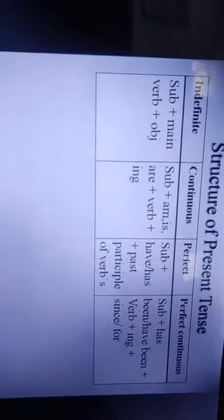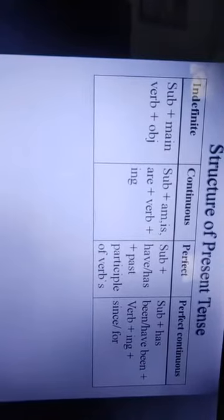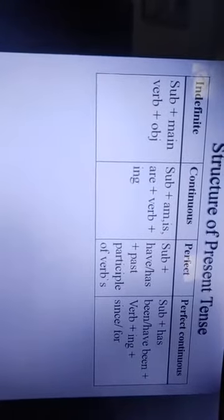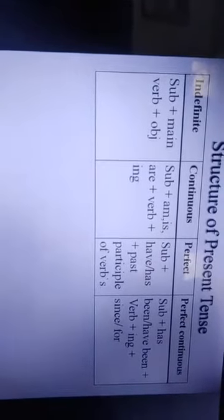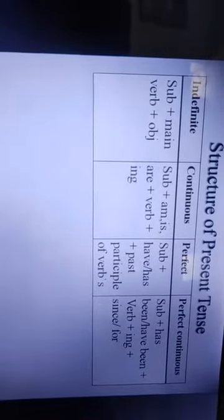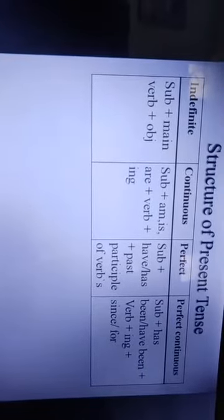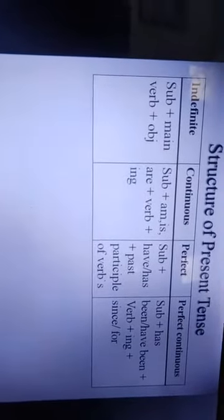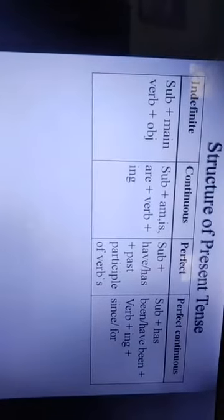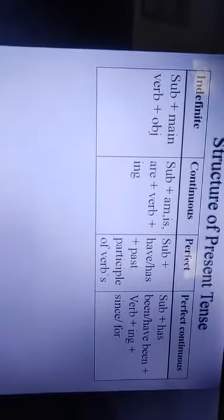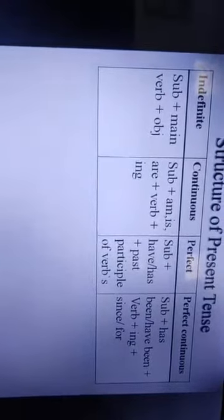Present continuous tense structure: Subject + am/is/are + verb + ing. Present perfect tense structure: Subject + have/has + past participle + object/extension. Present perfect continuous tense structure: Subject + have been/has been + verb + ing + since/for.